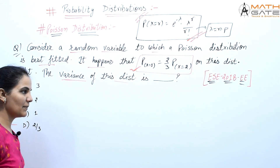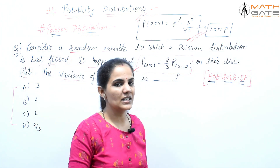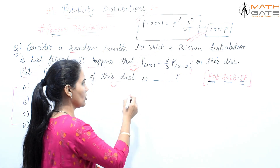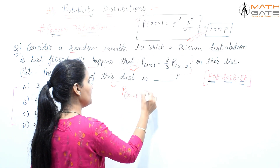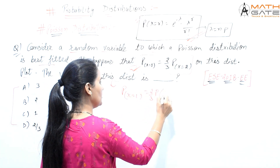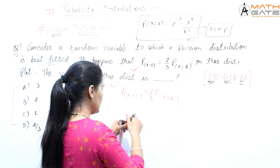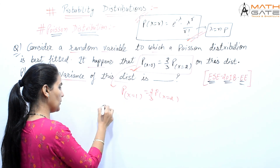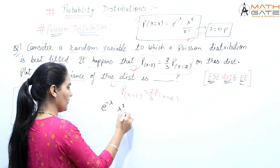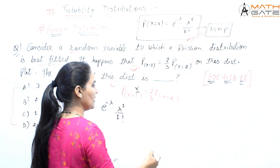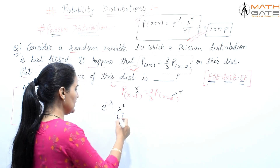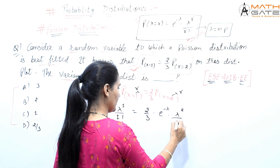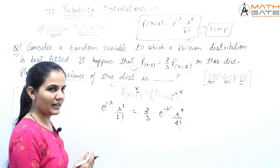This is a 2018 Engineering Service Exam question. We just write what is given and solve it quickly. Probability at x equals 1 is equal to 2 by 3 times probability at x equals 2. Writing the Poisson distribution formula: probability at x equals 1 gives e to the power minus lambda times lambda power 1 by factorial 1, and the right side gives 2 by 3 times e to the power minus lambda times lambda power 2 by factorial 2. Now e to the power minus lambda cancels on both sides.